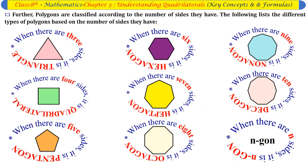Polygons are classified according to the number of sides they have. Three sides: triangle. Four sides: quadrilateral. Five sides: pentagon. Six sides: hexagon. Seven sides: heptagon. Eight sides: octagon. Nine sides: nonagon. Ten sides: decagon. N sides: n-gon.